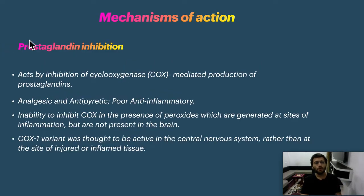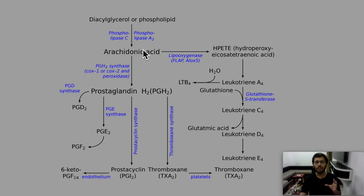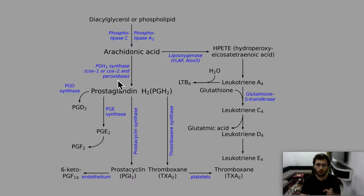Now let's discuss how paracetamol acts. It is not a complex pathway at all — quite easy. Arachidonic acid, which is the source of eicosanoids, has two pathways: the COX pathway and the LOX pathway. We will focus on the COX pathway when discussing paracetamol.